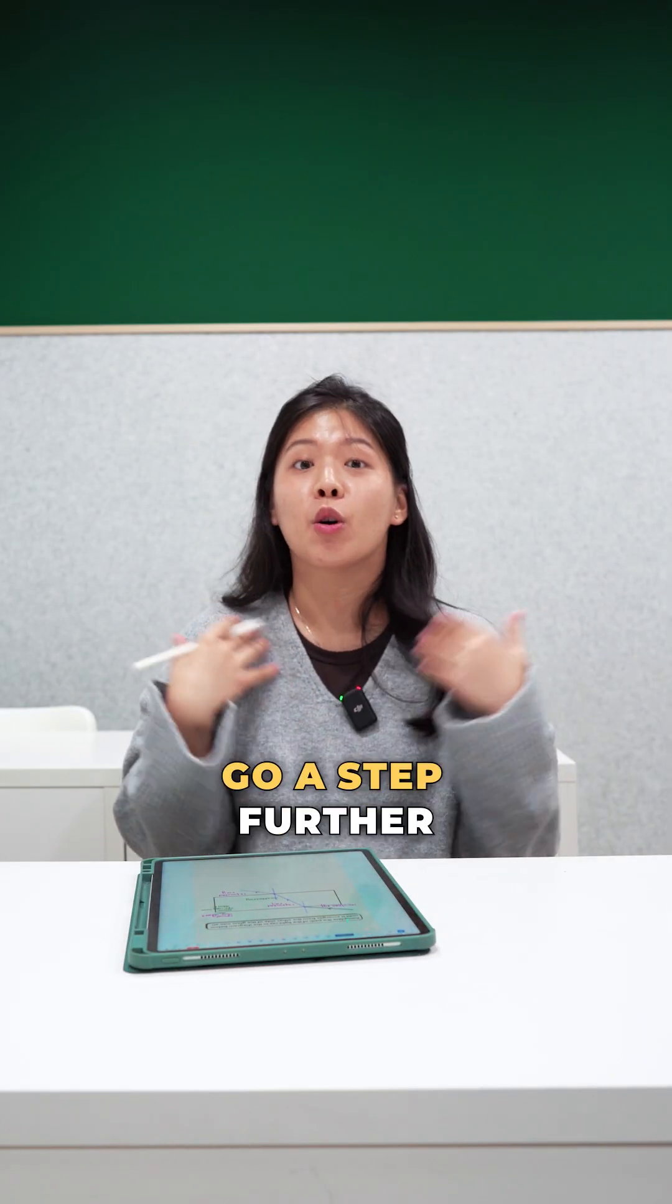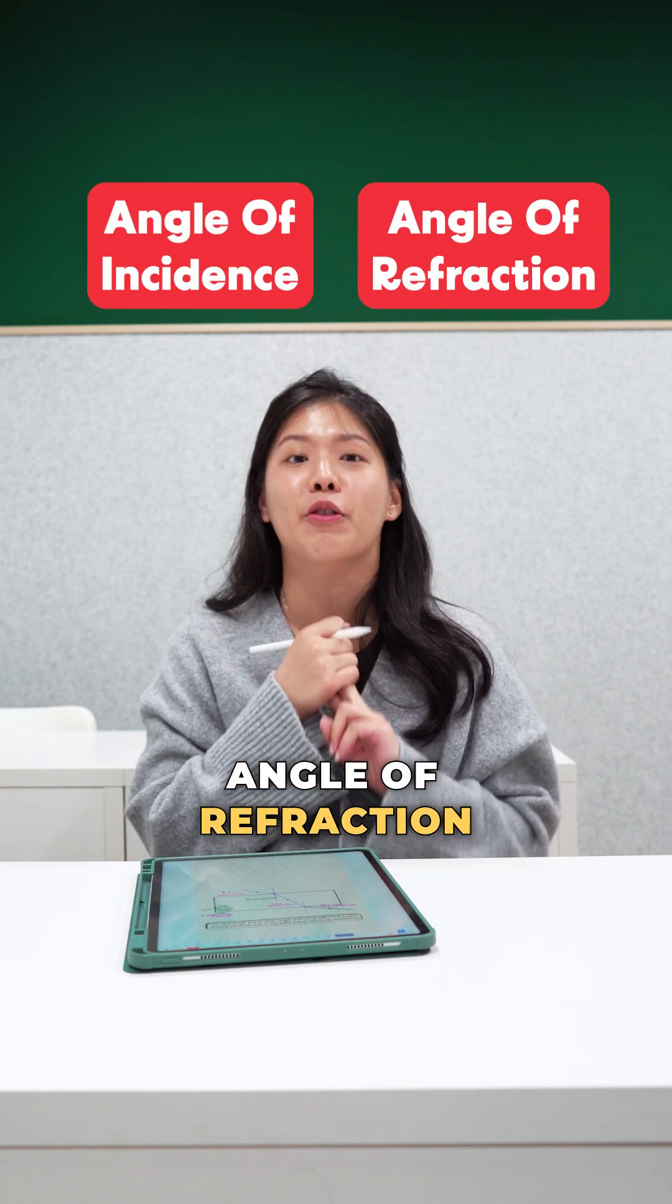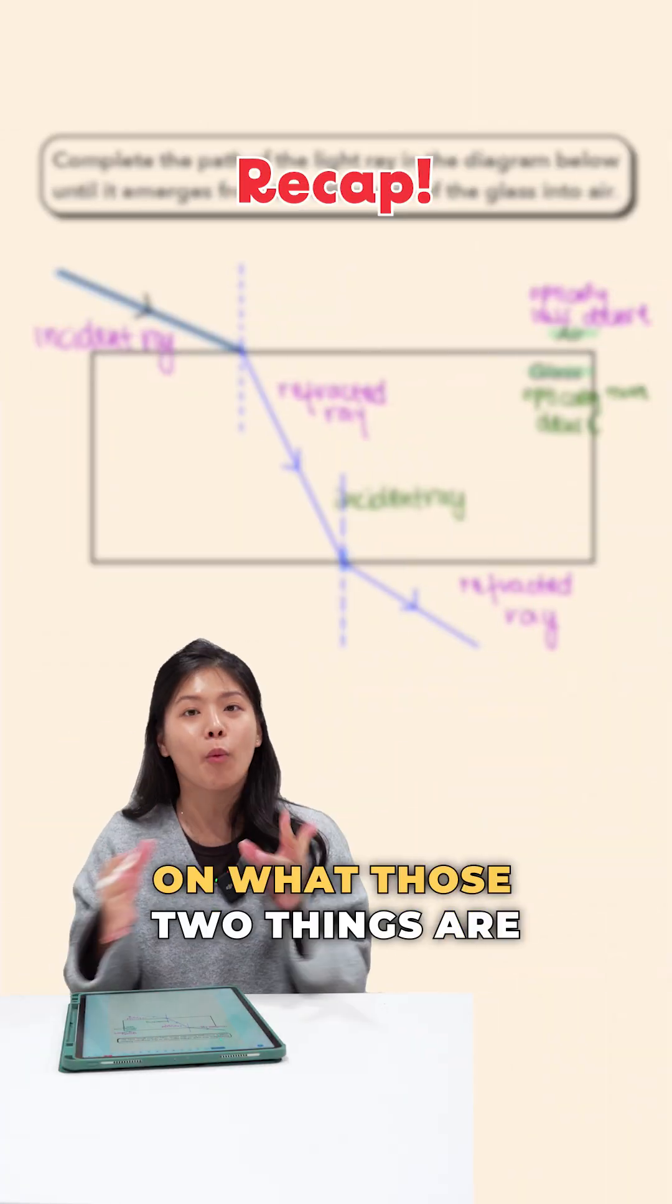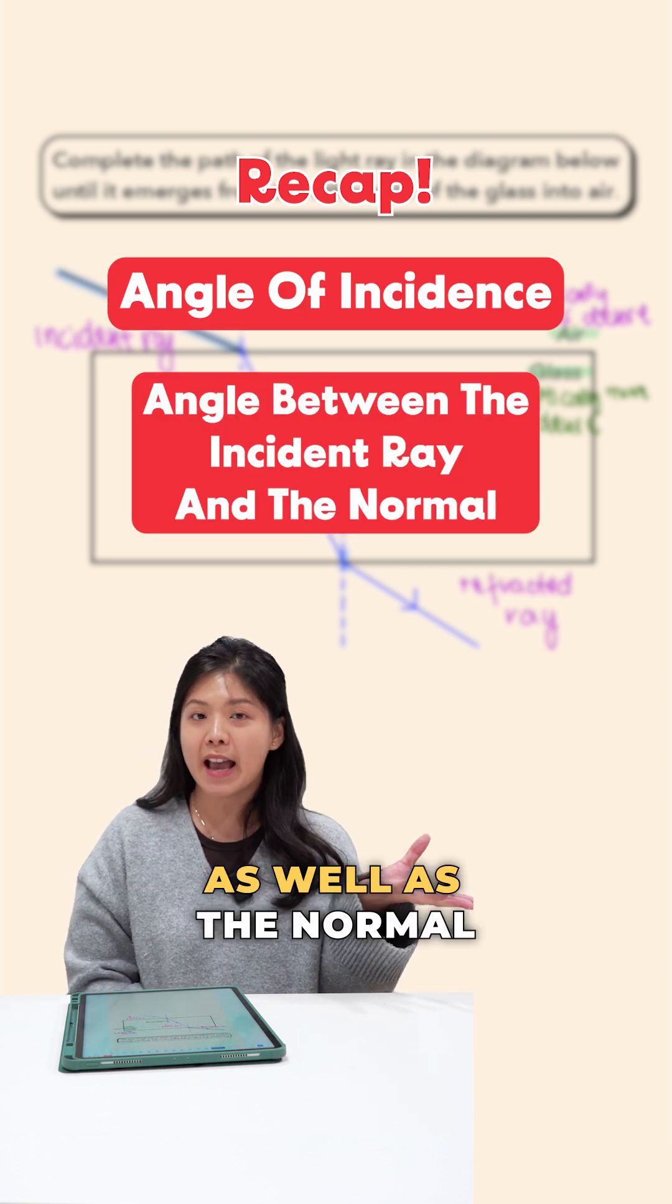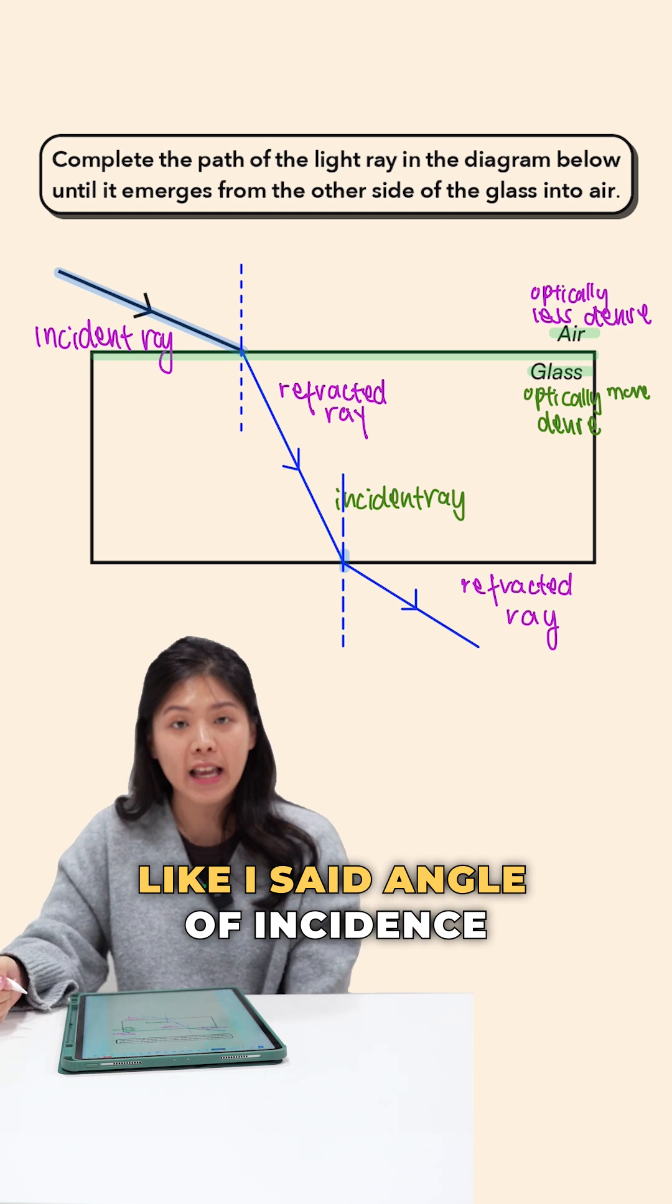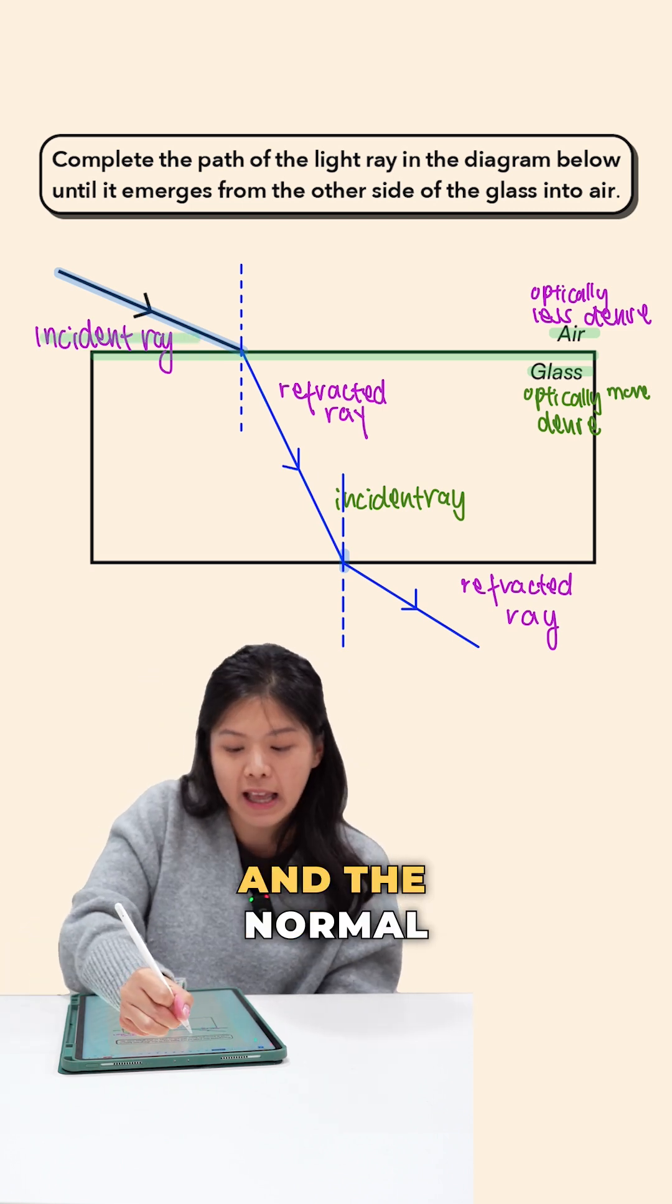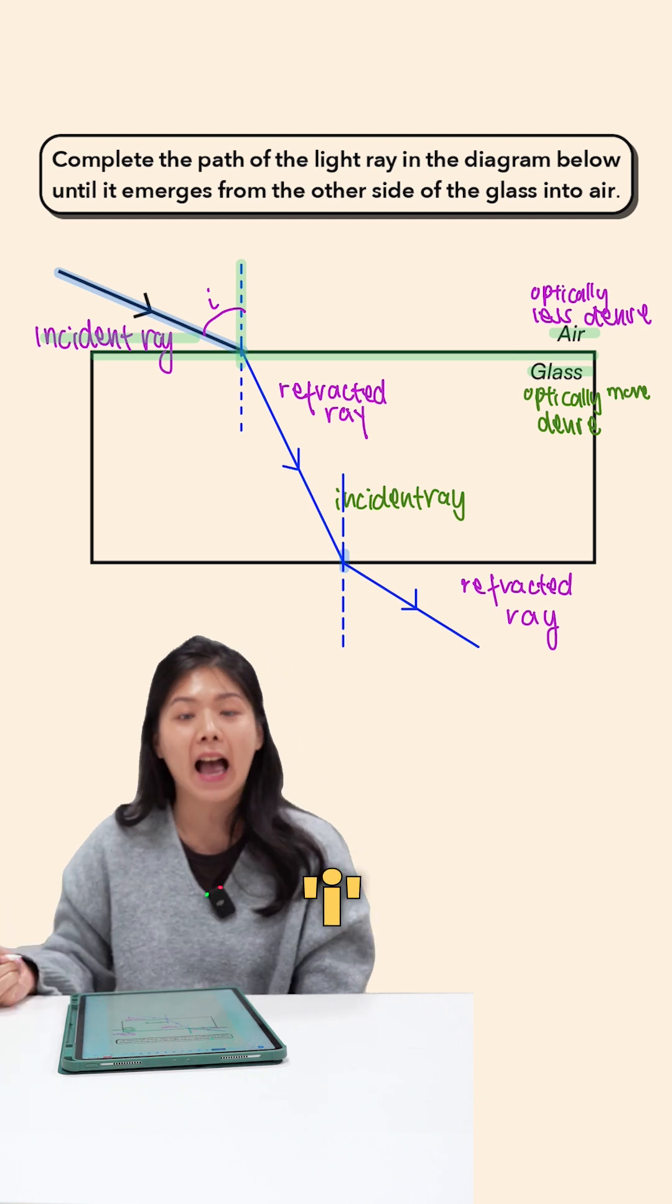So some questions may even ask you to go a step further. They will ask you for the angle of incidence as well as the angle of refraction. Let's do a little recap on what those two things are. We say that the angle of incidence is the angle between the incident ray as well as the normal. Let us look at my upper boundary first. Angle of incidence is between the incident ray and the normal. Therefore, it is the angle between that. So let us label this as I.